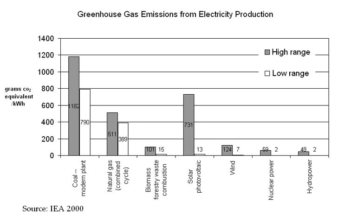Measurement of life cycle greenhouse gas emissions involves calculating the global warming potential of electrical energy sources through life cycle assessment of each energy source. The findings are presented in units of global warming potential per unit of electrical energy generated by that source. The scale uses the global warming potential unit, the carbon dioxide equivalent, and the unit of electrical energy, the kilowatt-hour. The goal of such assessments is to cover the full life of the source, from material and fuel mining through construction to operation and waste management.